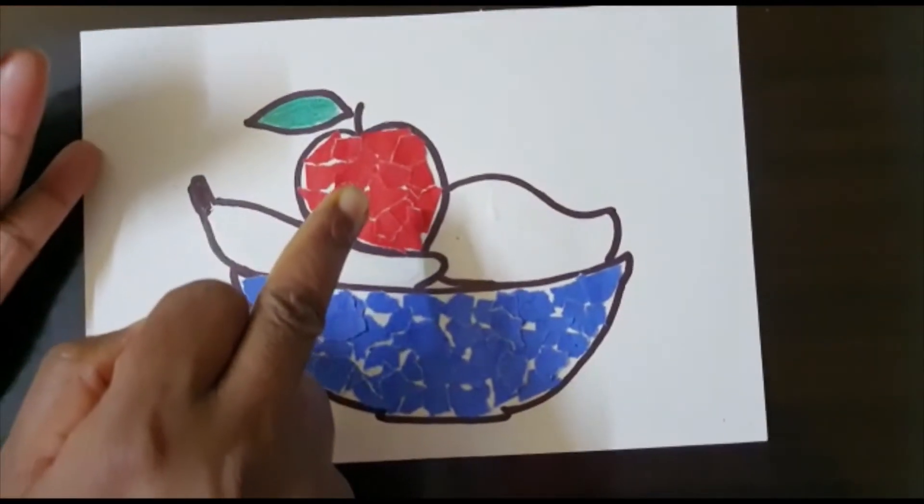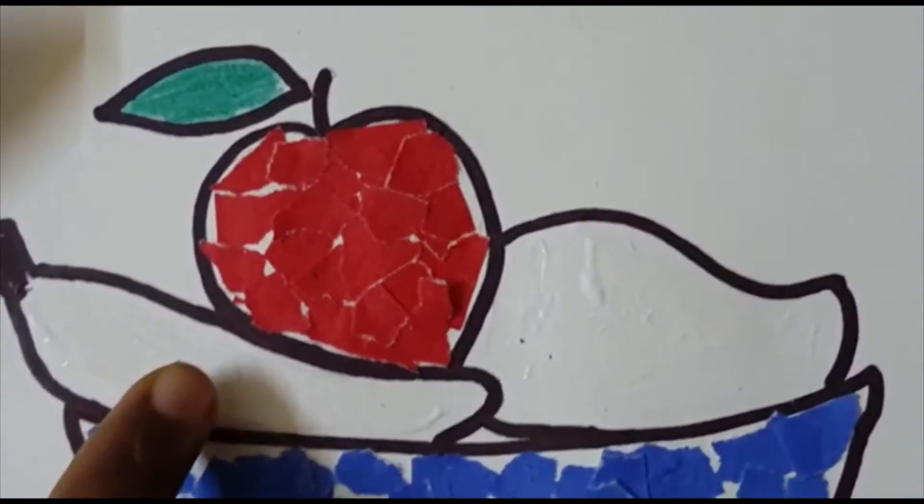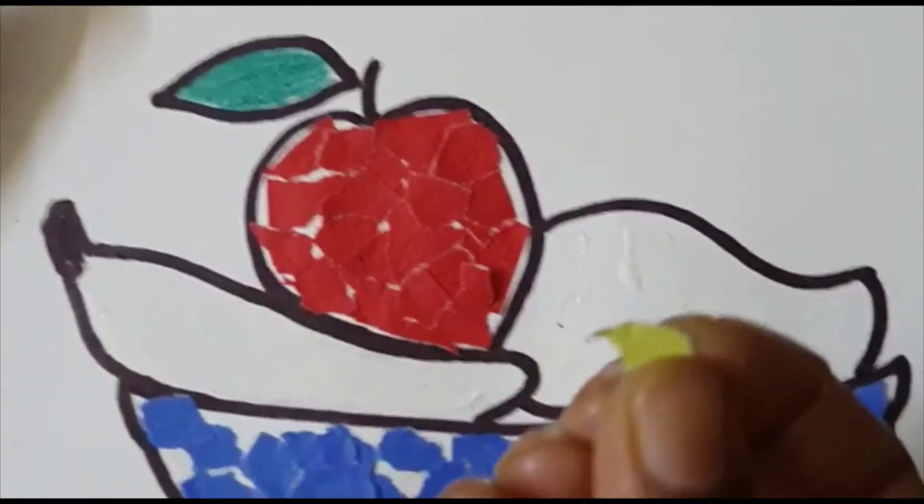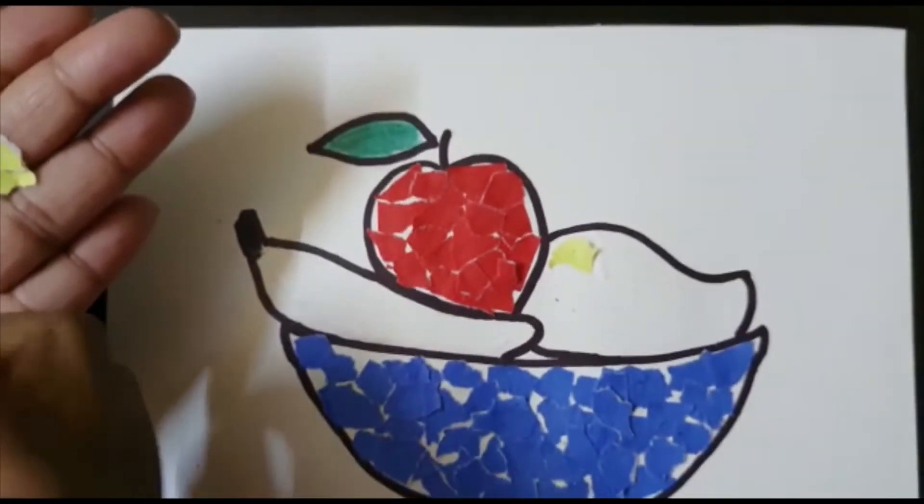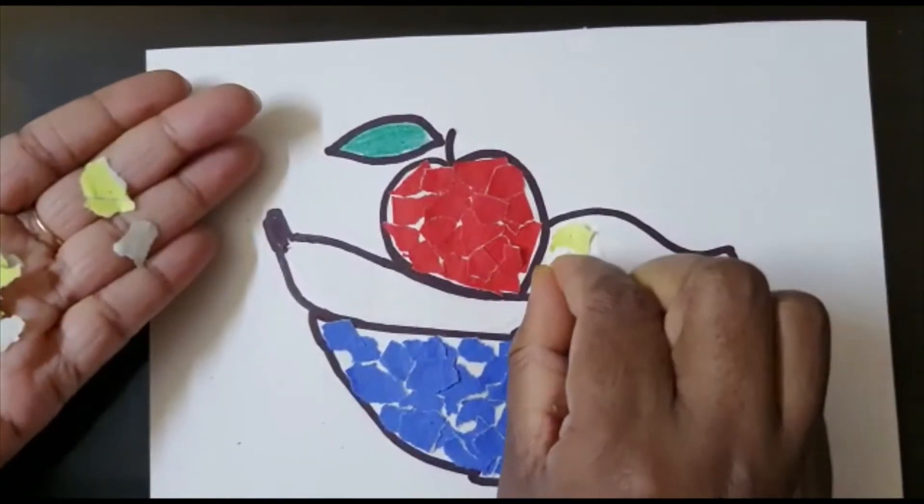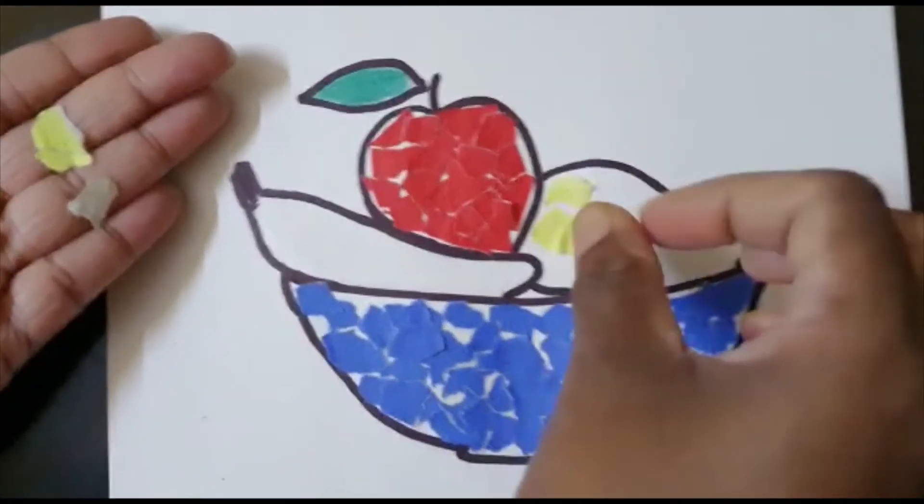Now the apple is done. We will be filling the mango and after that we will be doing the banana. The same way, we will be pasting the yellow paper, one by one, pasting all the pieces.